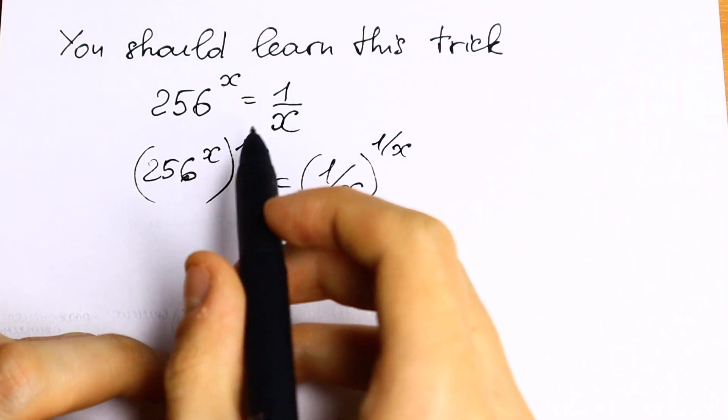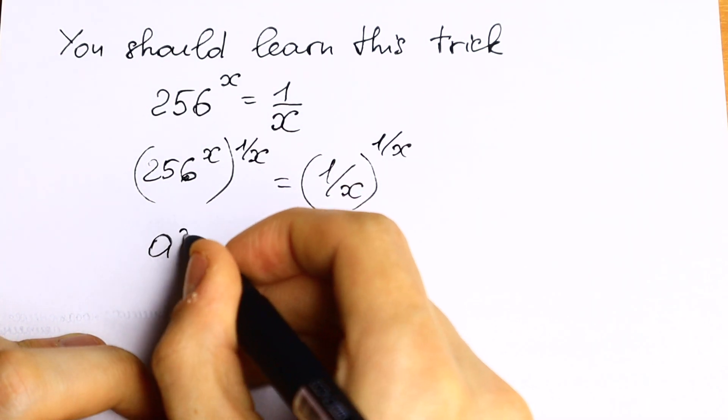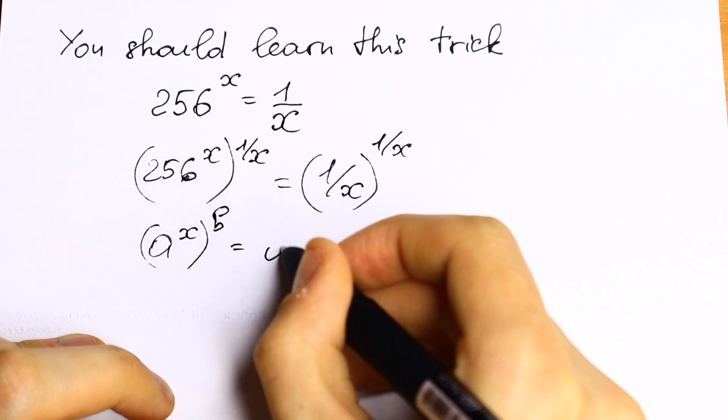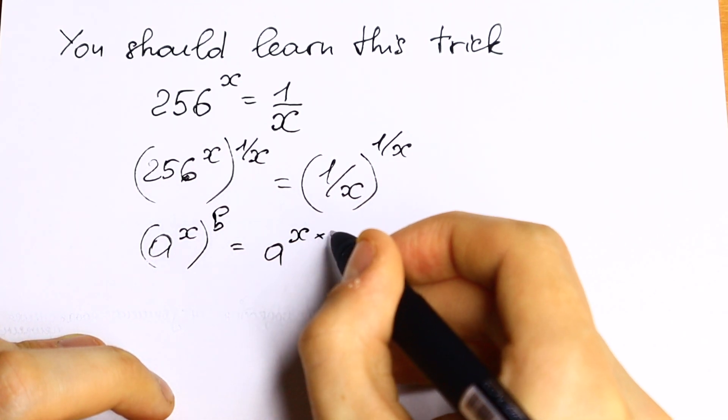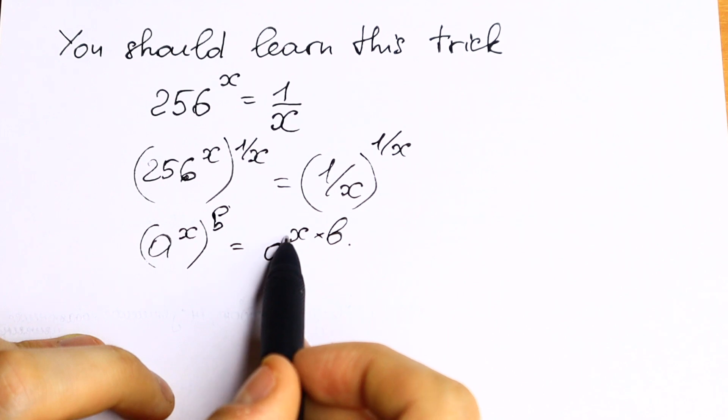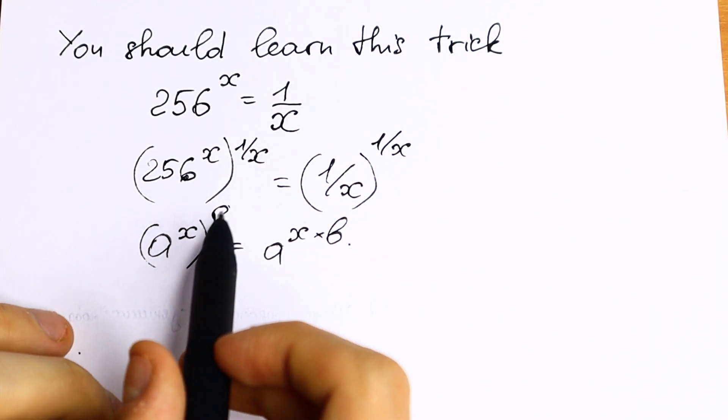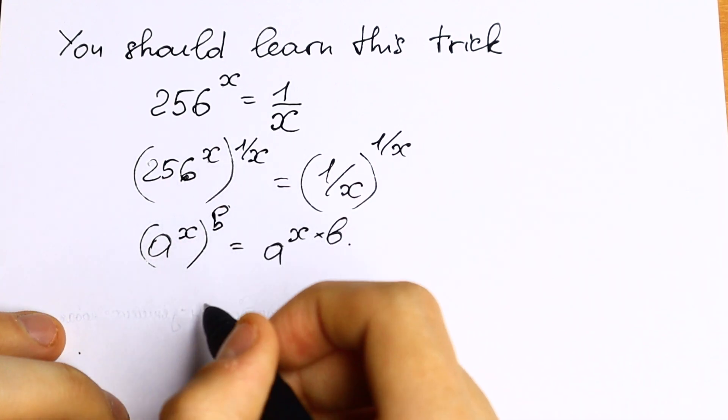What are we going to do next? We need to know the rule: if we have a to the power x raised to the power b, we can write it as a to the power x times b. So we just multiply our powers. And we can use this rule because this is the same situation, so we need to multiply x times 1 over x.